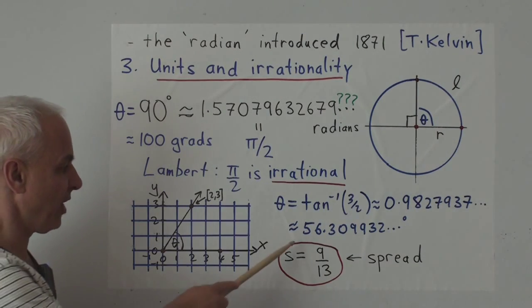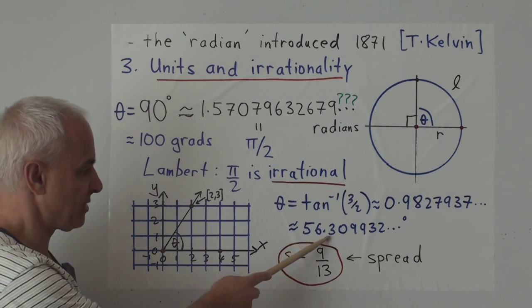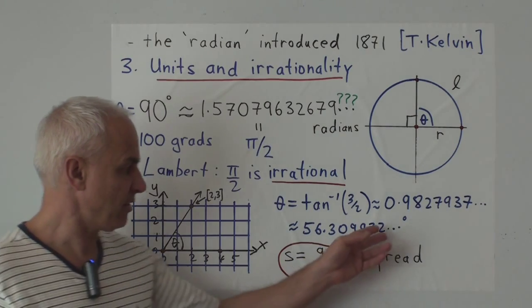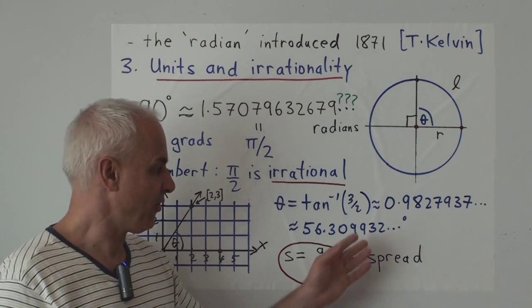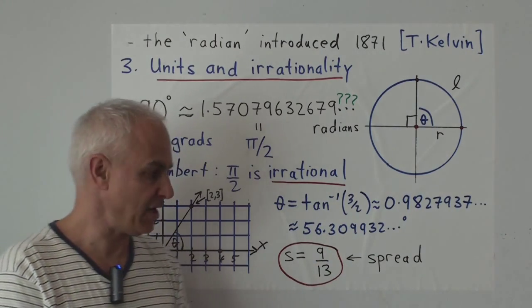We could convert that into degrees and in degrees it's not that much better. It's 56.309932 dot, dot, dot. And again, there's no rhyme or reason that's very easily apparent to how those digits continue.